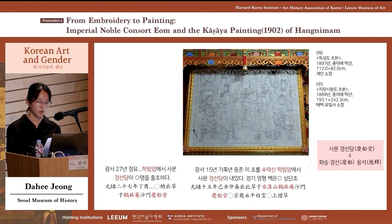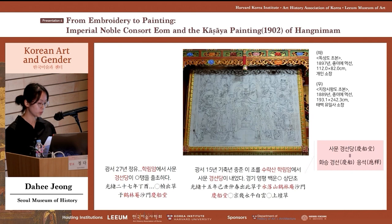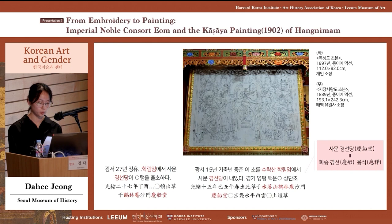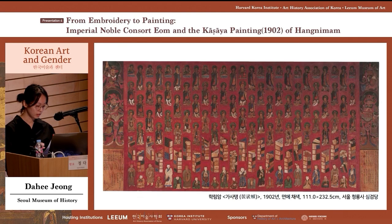It is also worth noting that Eungseok was the one who designed Ga Sa Ya Isipa Taeng and also produced the draft of the Buddhist painting in Hangnimam. Hangnimam was a place where drafts were kept or handed over to other painter monks. As such, the draft of Ga Sa Taeng that Eungseok designed reached Lady Eum through Hwayeon or Hangnimam where it was stored, and became one of Lady Eum's options when she decided to commission a Ga Sa Taeng.